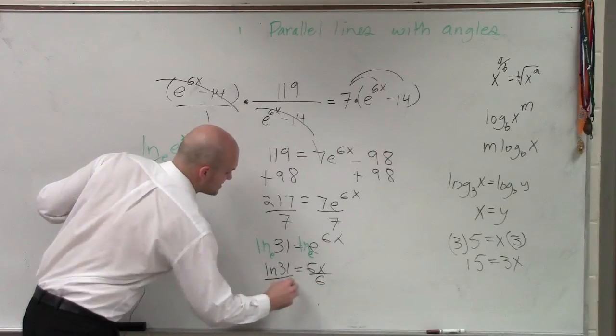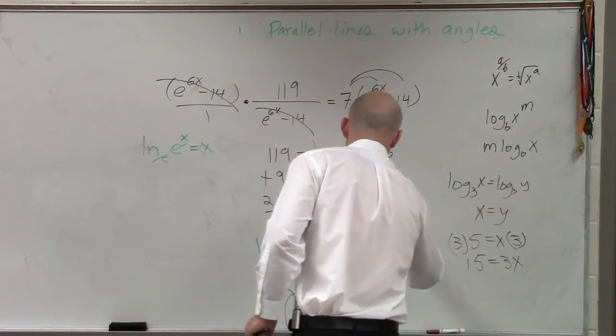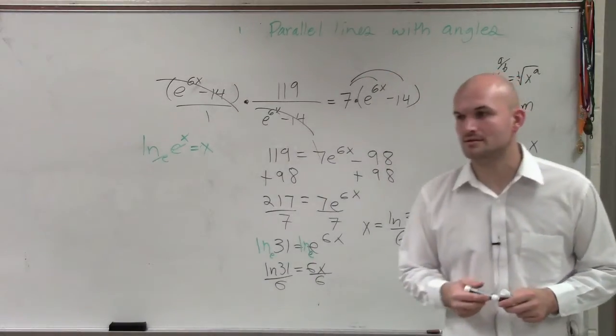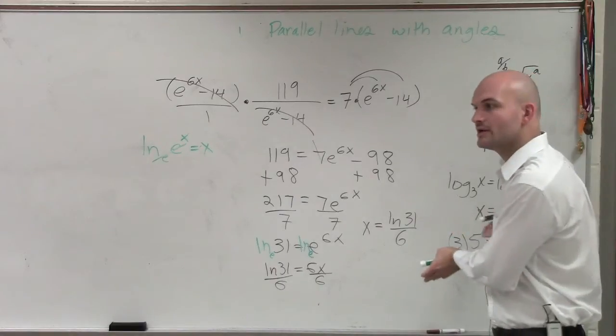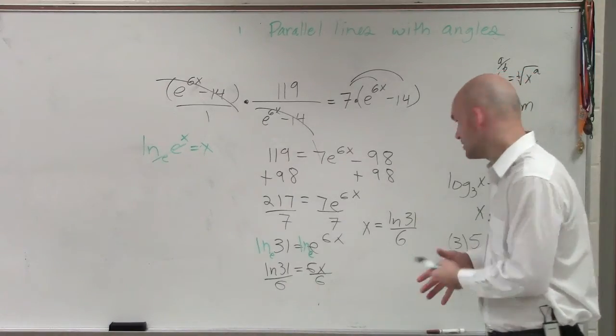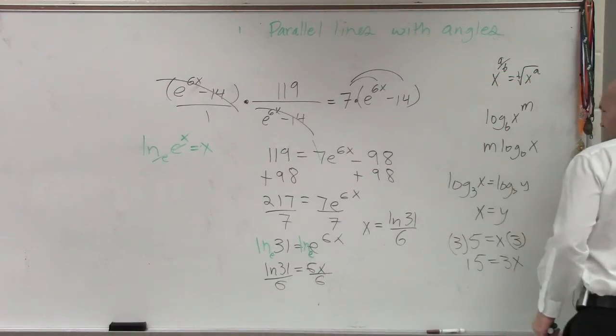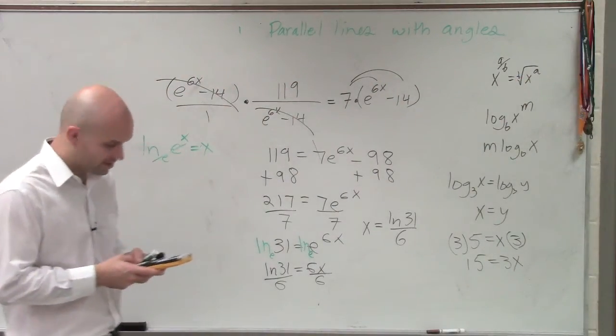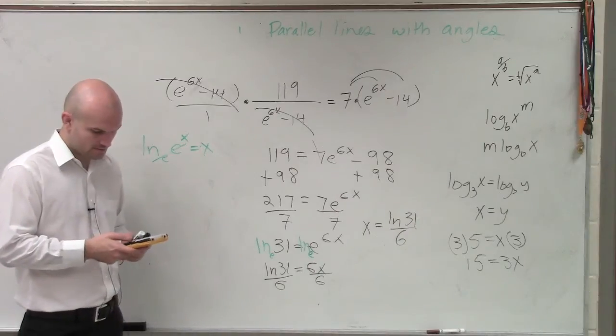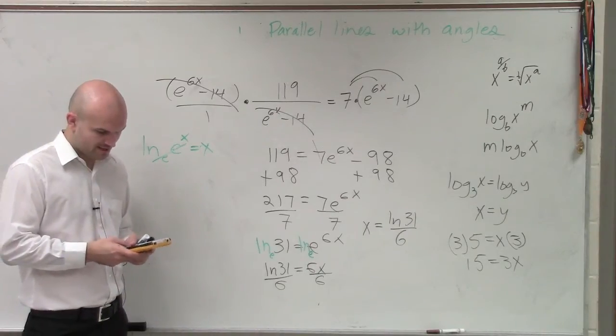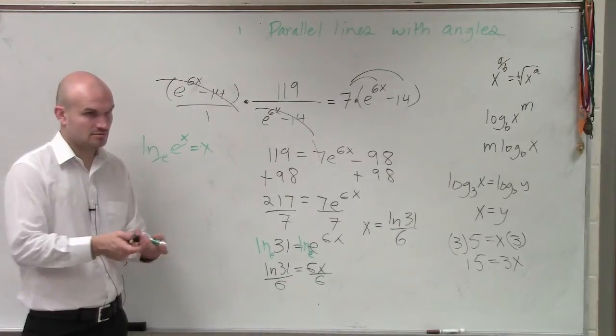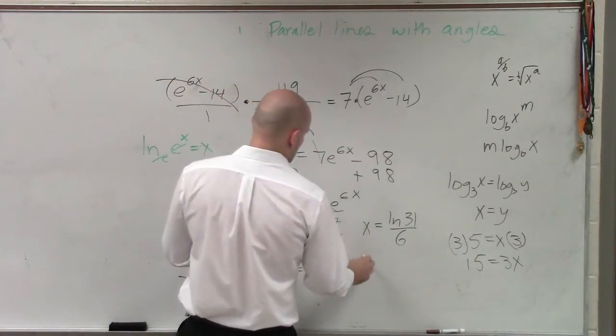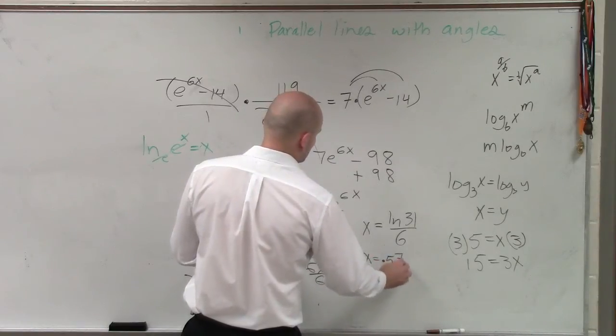Divide by 6. Divide by 6. X equals ln of 31 divided by 6. So now that's simply all we've got to do. So then you go back to your calculator. And you just say, all right, let me do ln of 31 divided by 6. And I get 0.57. So x equals 0.57.